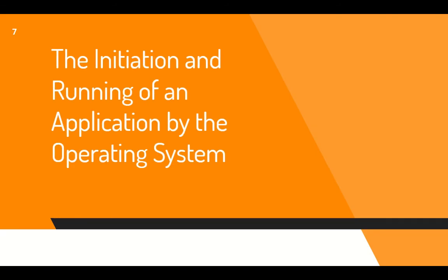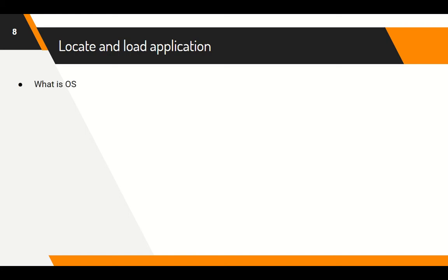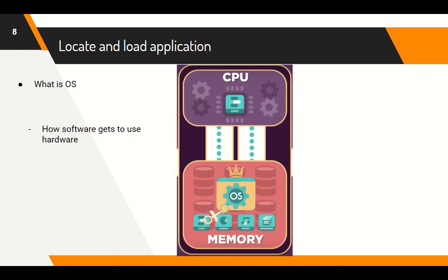The initiation and running of an application by the operating system. The operating system is basically the master program that decides how software gets to use hardware. The operating system is able to locate the application through the computer's memory, which leads the software to the central processing unit where it runs. This essentially means that we get to locate and load applications through the operating system.